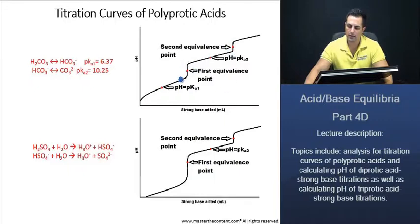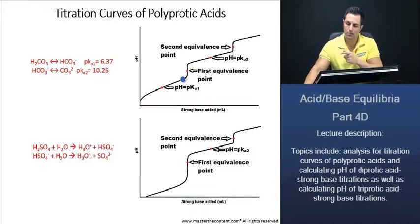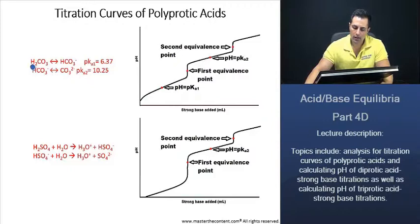And now let's talk about what is actually transpiring at each point along the graph here. We're initially going to have carbonic acid. Then when pH equals pKa1, we're actually going to have equal concentrations of our carbonic acid and our bicarbonate.